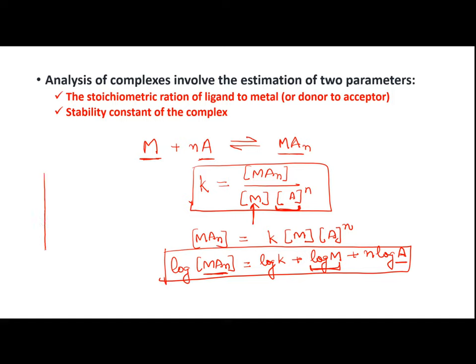If I plot a graph between the concentration of complex versus ligand concentration — since both sides are in log — I will get a straight line curve. From the intercept I will get the value of K, and from the slope I will get the value of n, that is the ratio in which my ligand is combining with the metal ion.